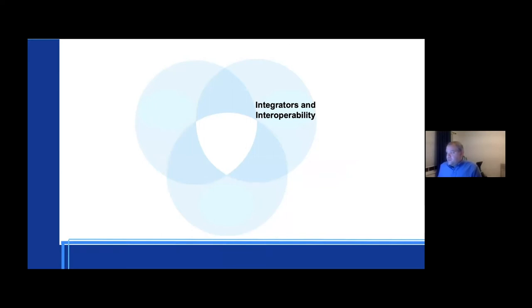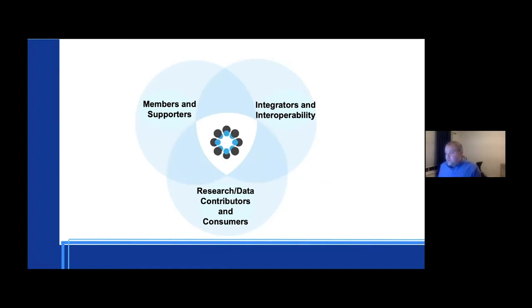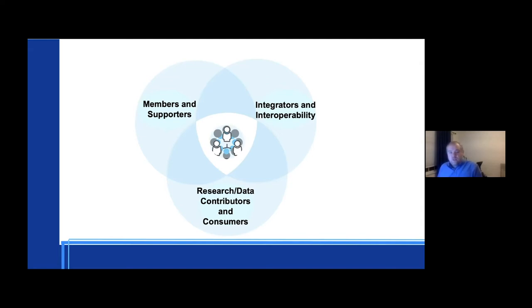Rather, it comes from three broad groups that are intersecting — echoing a number of groups we've heard from this week. In our case, we have integrators, members and supporters, and research data contributors and consumers. Where the needs and opportunities for these groups collide in the middle is where we see real opportunities for technical infrastructure to start closing those gaps. But as was pointed out earlier, the technical infrastructure is pointless without a social infrastructure to accompany it — the technical infrastructure grows out of communication and coordination among these three broad stakeholders.